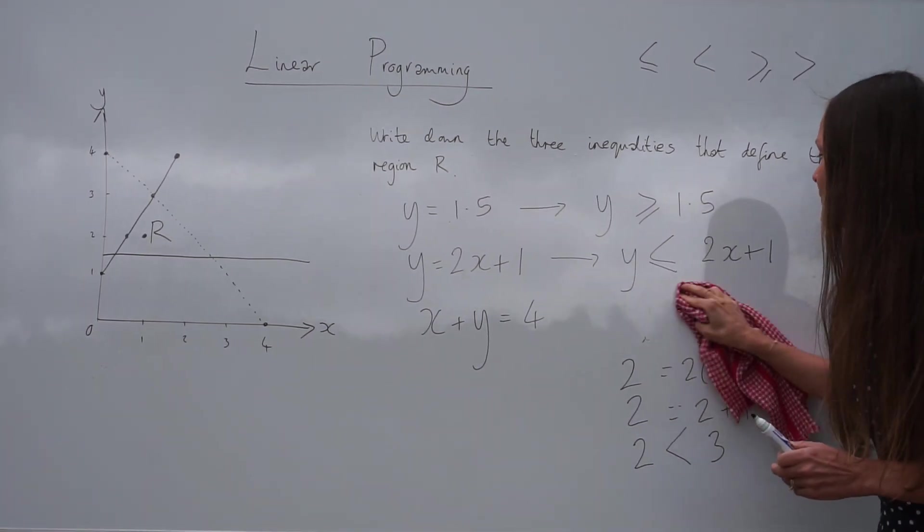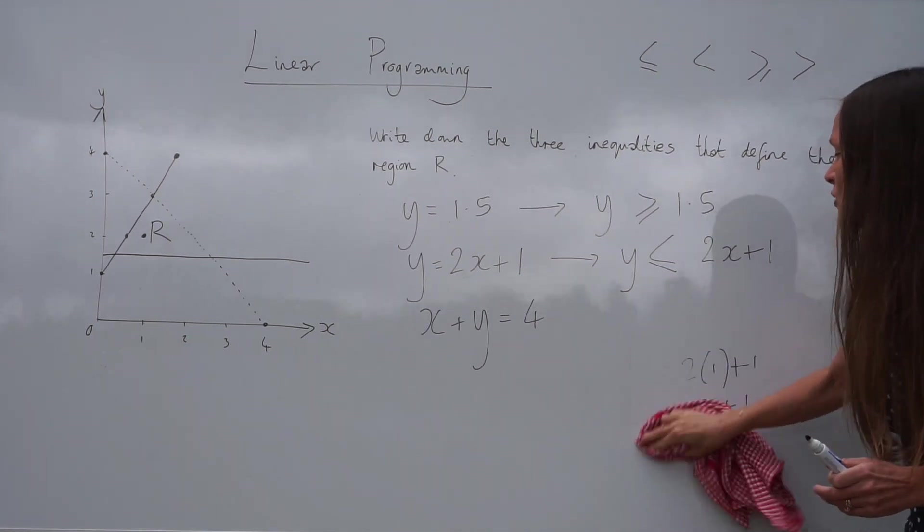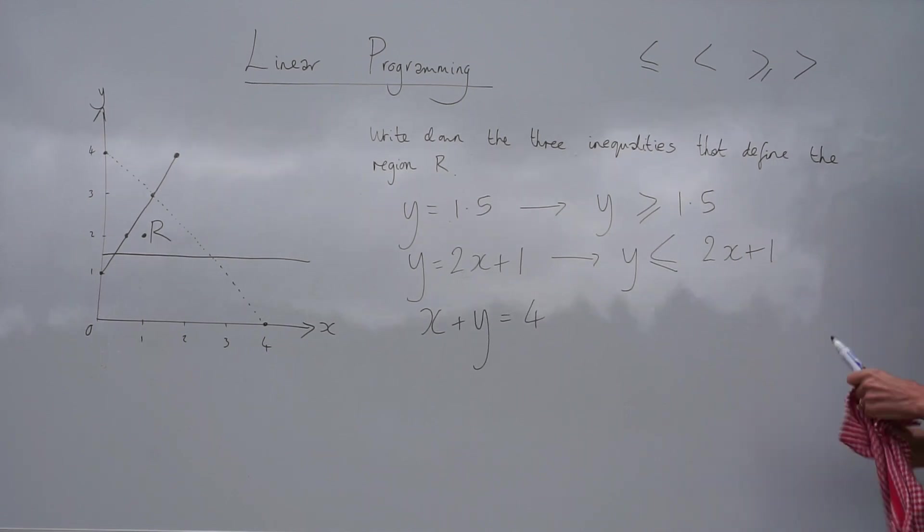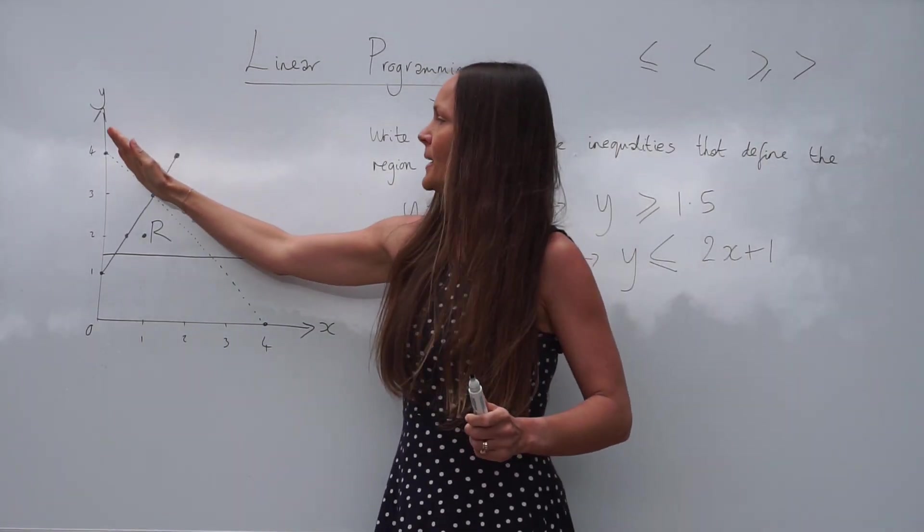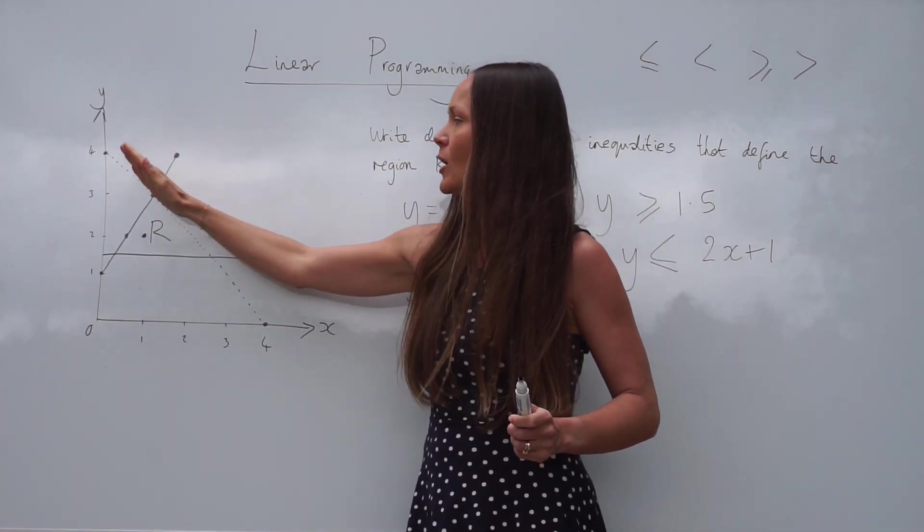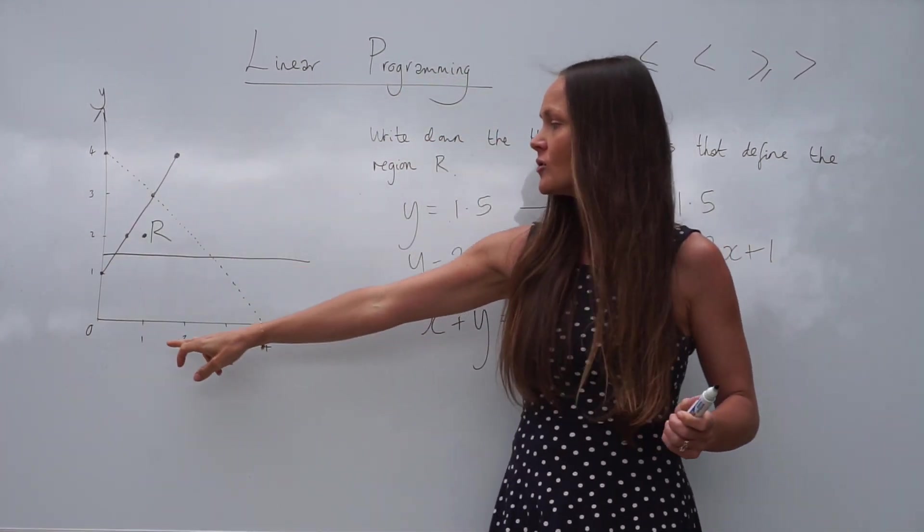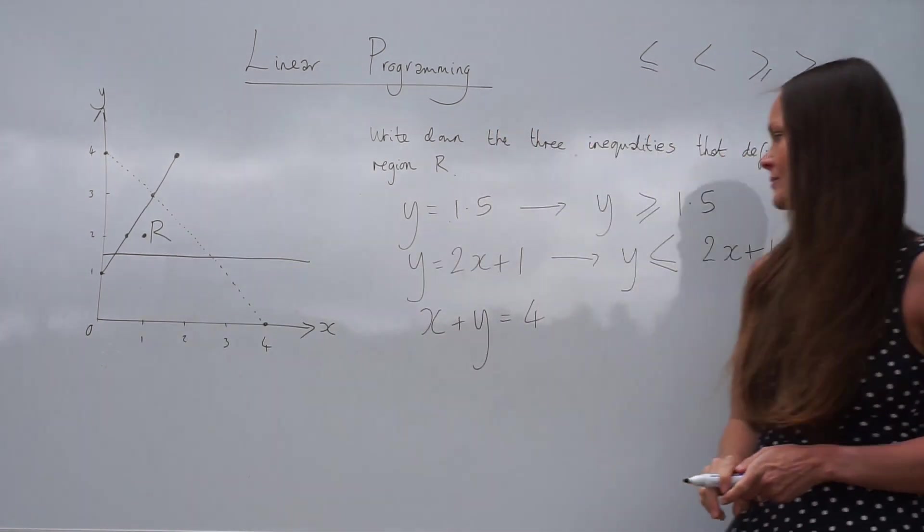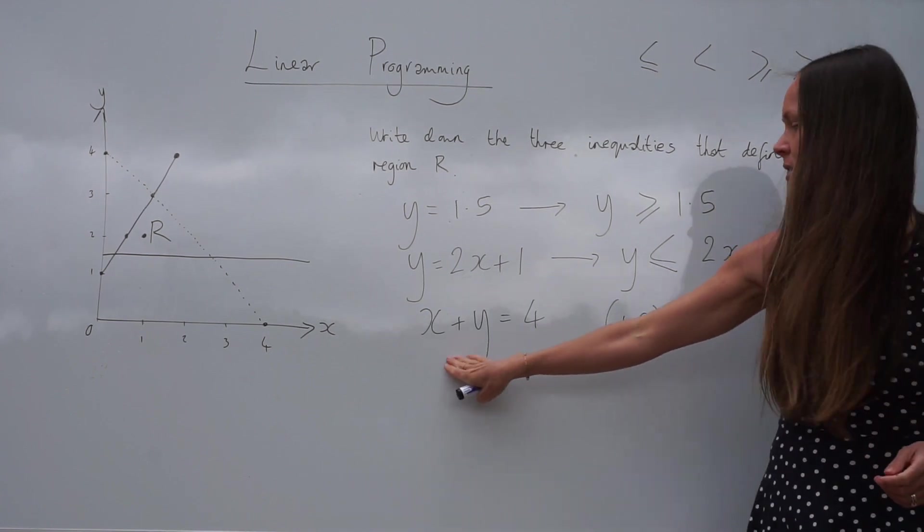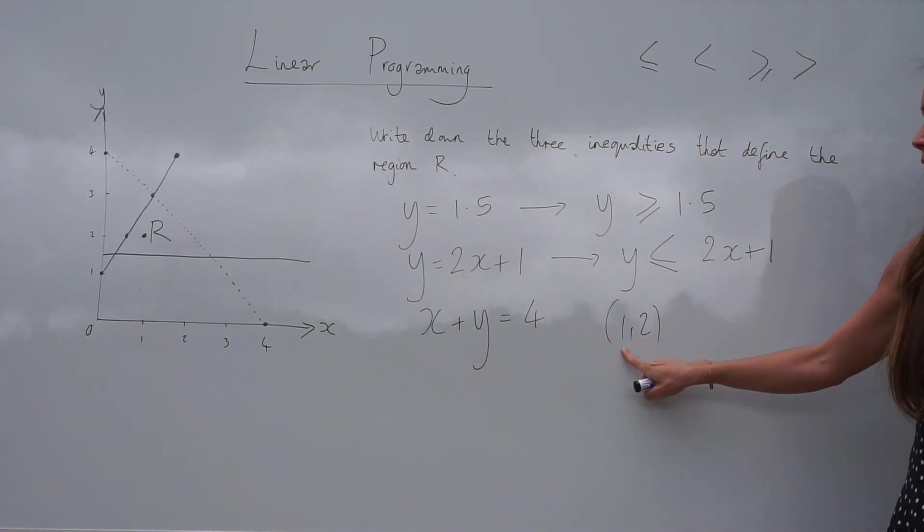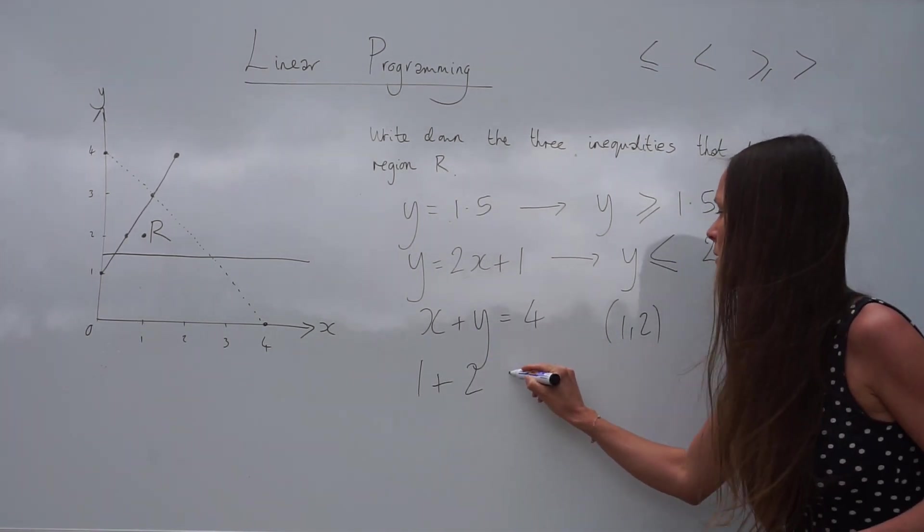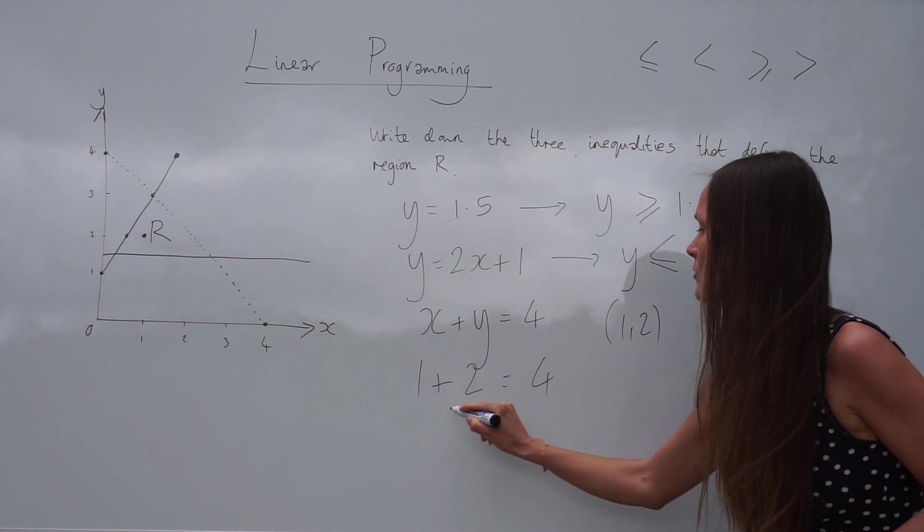On to the final equation. So I'm going to use that method again. I'm going to choose a point that lies below that dashed line. Because the region R is below that dashed line. So I'm just going to choose the same point, 1, 2. And I'm going to substitute those values into this equation. So x is the value of 1. And y is 2. And 1 plus 2 is 3.